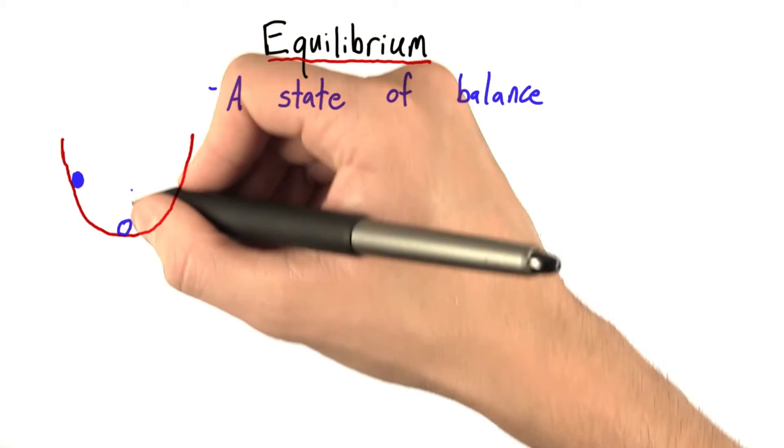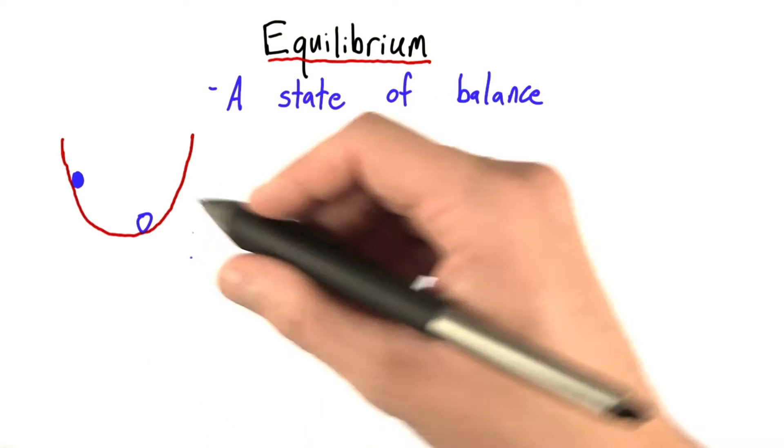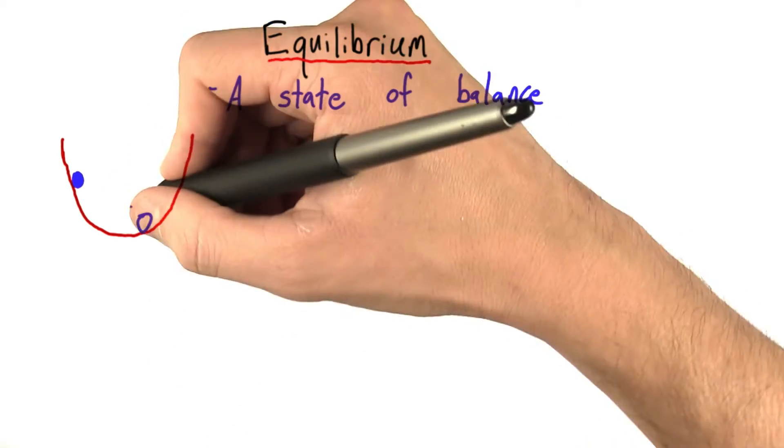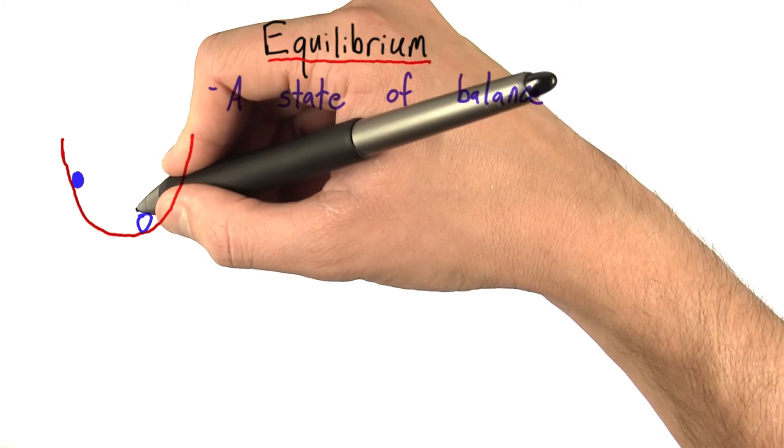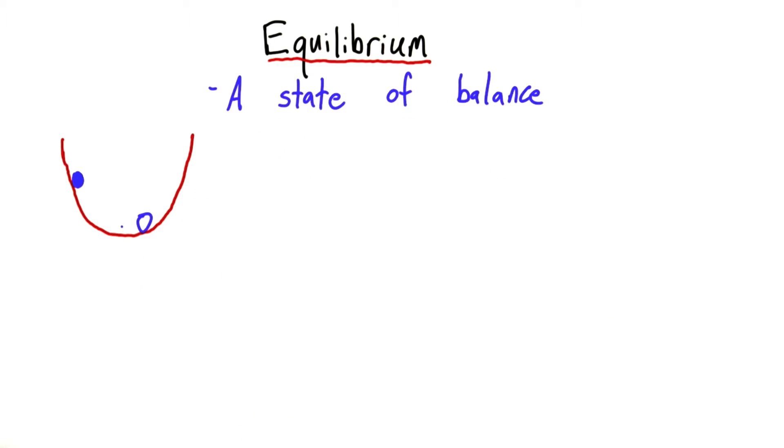If you disturb the ball from its equilibrium, say by shifting it a bit to the right, now it's on a hill. We could do some force decomposition, and we would see that there's actually a force pointing down the hill. It's going to tend to restore this object back towards its equilibrium.